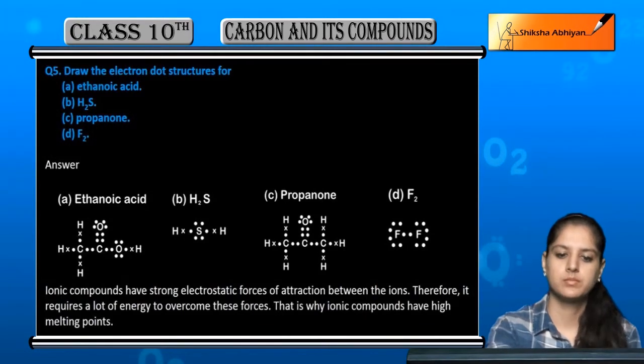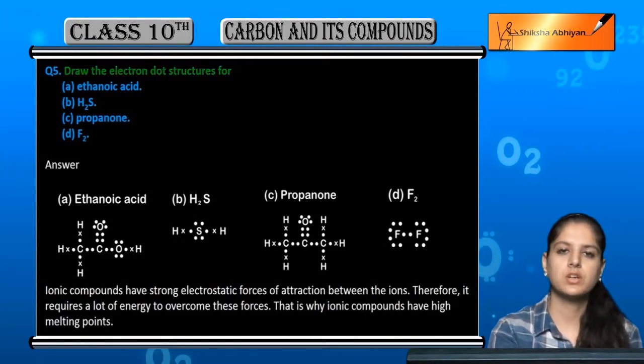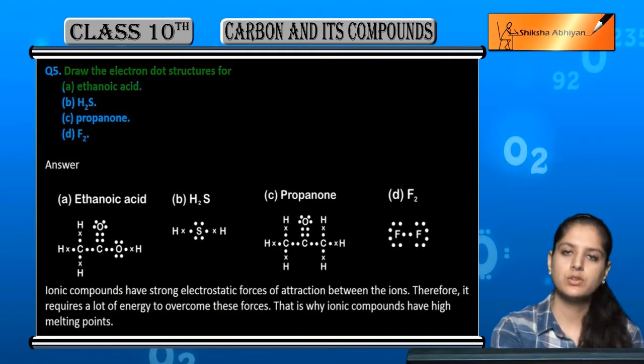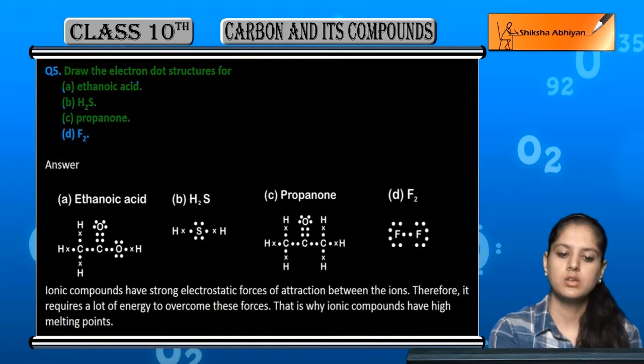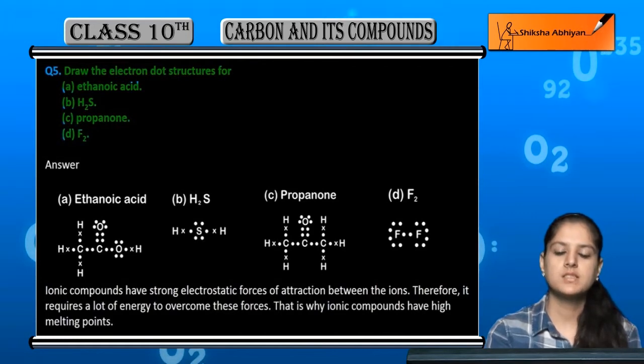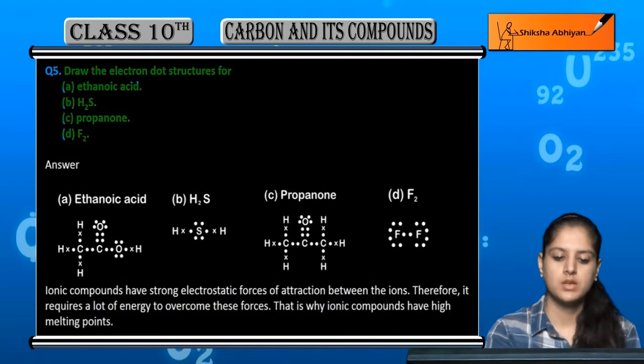Question number 5: Draw the electron dot structures for ethanoic acid, H2S, propanol, and F2. We will draw the electron dot structures first.